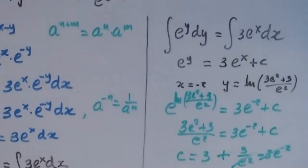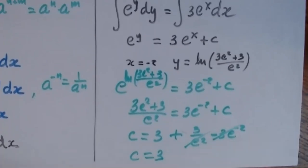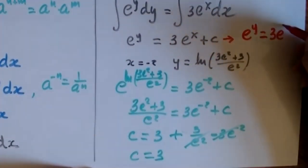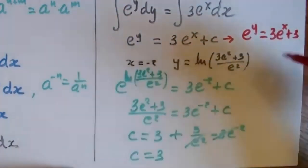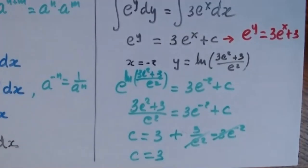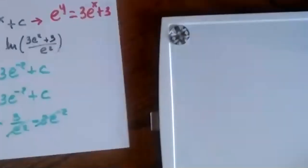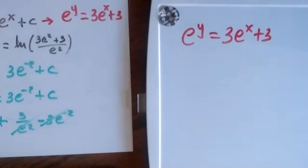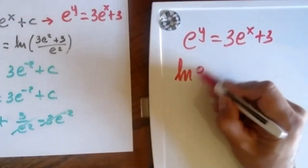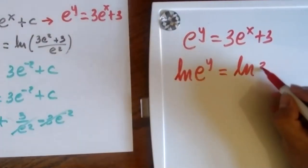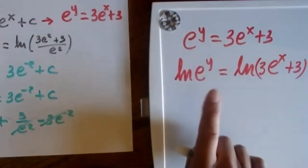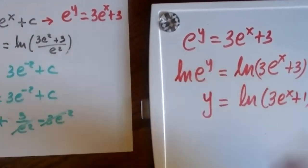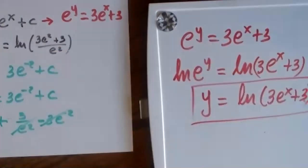So my solution is e^y = 3e^x + 3. But this isn't complete yet — I need to solve for y explicitly. Taking the natural log of both sides: ln(e^y) equals ln(3e^x + 3), so y equals ln(3e^x + 3). That's my final answer.